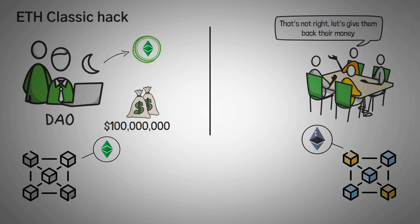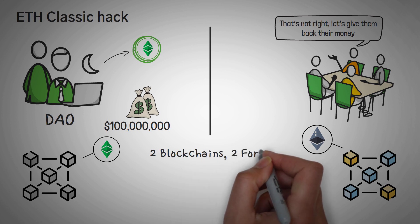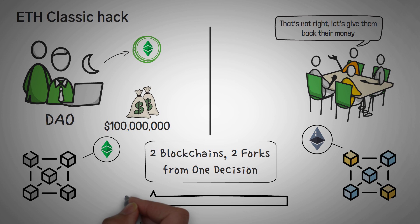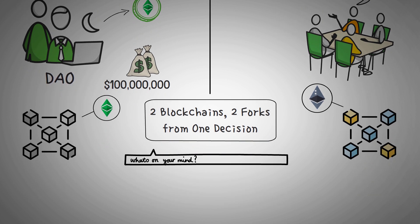And we call it Classic because it runs on the old rules of Ethereum. Blockchain purists think that we shouldn't be able to intervene like this. But we did, and now, because of that, there's two blockchains, there's two forks, simply from one decision. Do you think reverting this blockchain decision was right? What are your thoughts? Please let us know in the comments below as it's a very controversial topic.